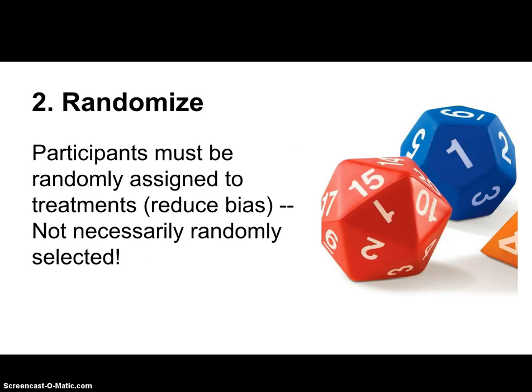The second important thing — and probably the most important thing for an experiment — is that we randomly assign our participants into treatment groups. This is going to help us reduce our bias. It isn't really necessary for us to randomly select our individuals, although it might be; it depends on the situation. For example, if we want to test a new drug on arthritis, we don't necessarily need to randomly choose people in the hospital — we really need people with arthritis. We can ask for volunteers as long as they have arthritis, and then we randomly assign those people into our treatment groups. So we must randomly assign into treatments.